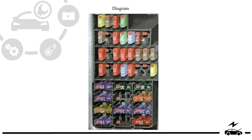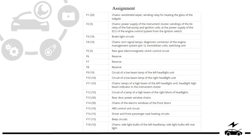Passenger compartment fuse box — Type 1. Diagram. Assignment.